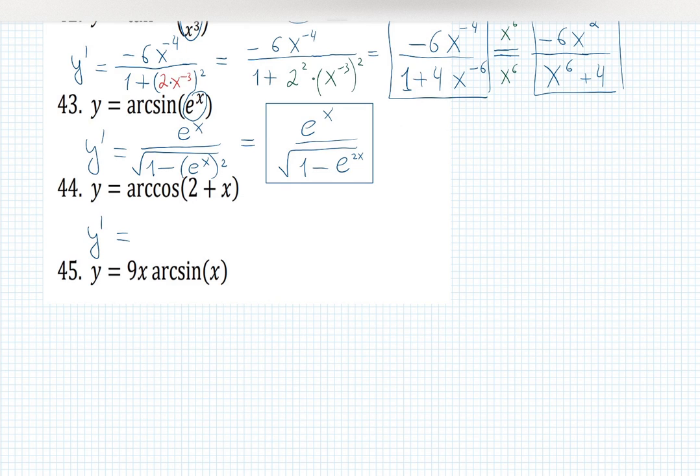y prime is arccosine. Remember, it's negative. I'll put negative in front of the fraction. Square root 1 minus input squared. But what is my input? 2 plus x. 2 plus x squared because of the formula of the derivative of the arccosine. And the negative in front, don't forget.